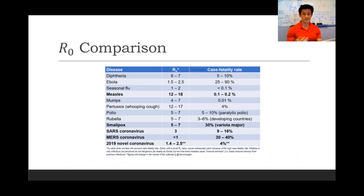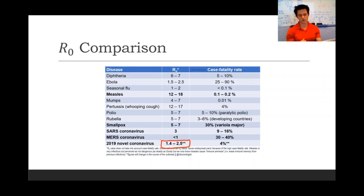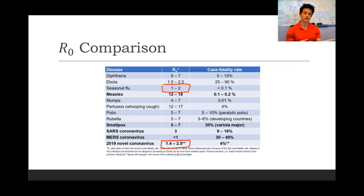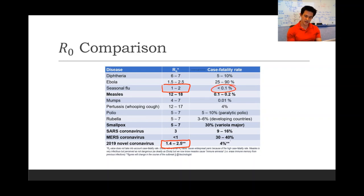Here's a comparison of the R0 values for various diseases. The R0 value for this disease is somewhere around 2, which is comparable — maybe a little bit higher — than the R0 value for seasonal flu. However, unlike seasonal flu, which has a fatality rate of about 0.1%, this disease has a fatality rate that's much higher.